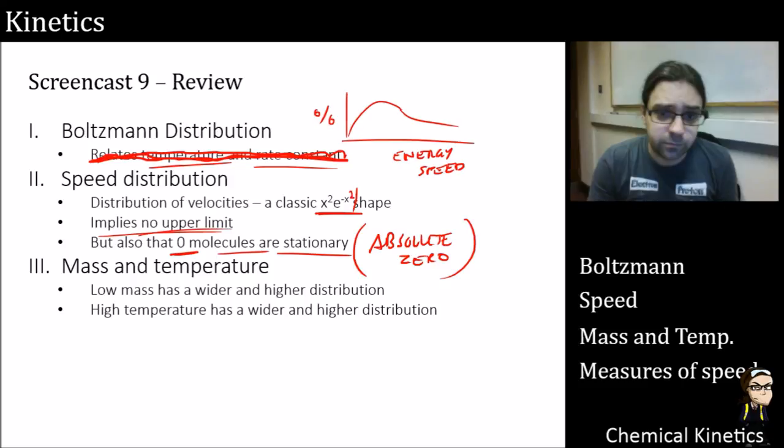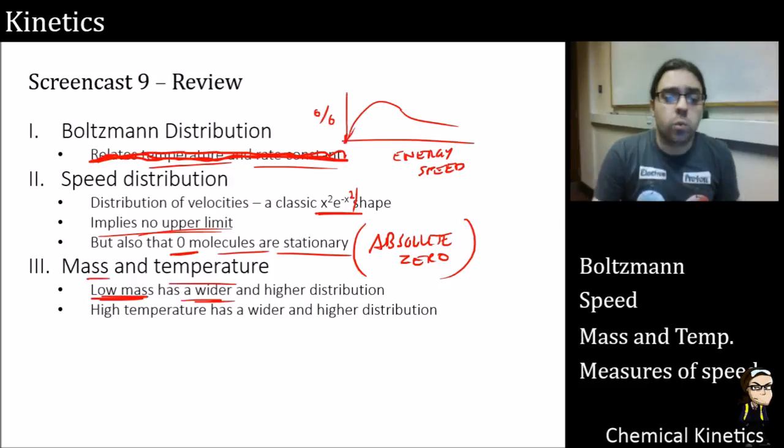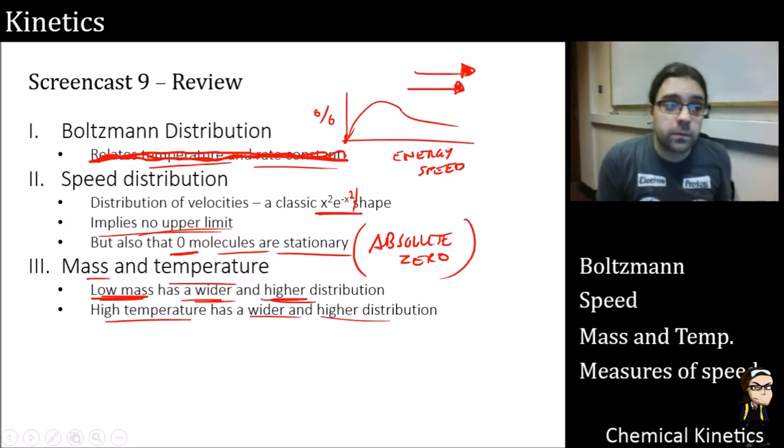Mass and temperature: a low mass gives us a wider and higher distribution, sending the graph in this direction. And then high temperature has a wider and higher distribution as well, sending the graph in that direction. So that's the Maxwell-Boltzmann distribution. It's quite important for kinetics, especially when we're starting to look at the microscopic theories behind it. We'll see you next time in the lecture where we'll do some problem solving.